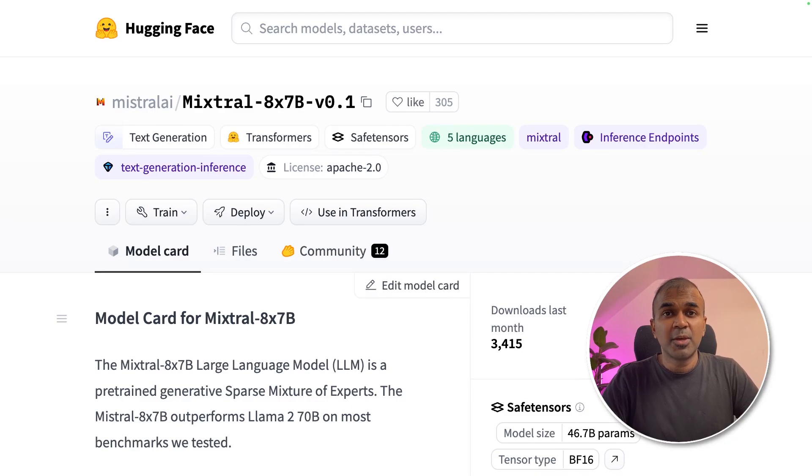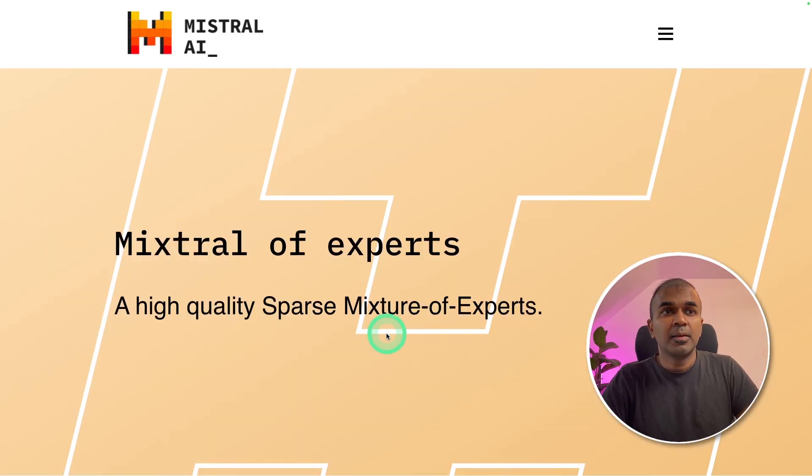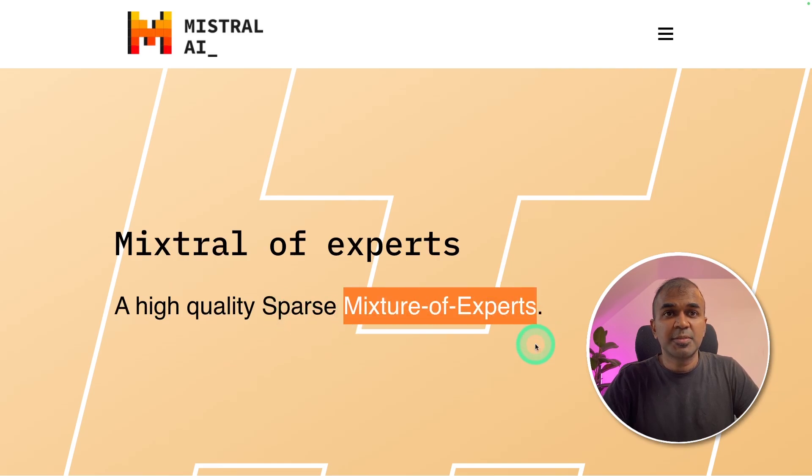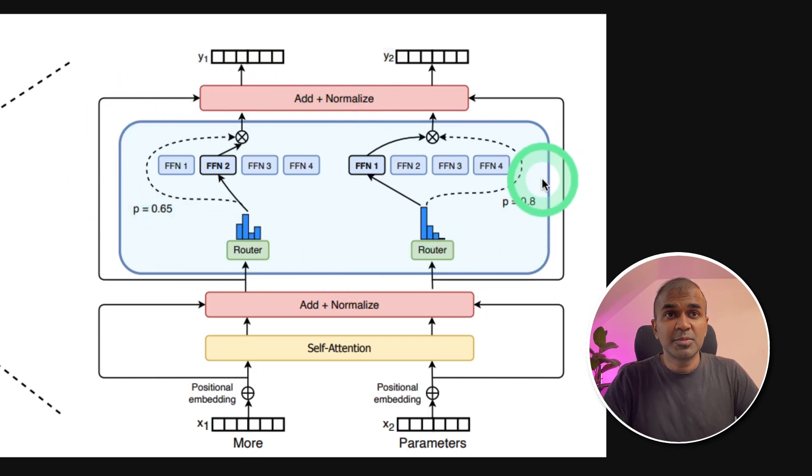Coming to Mixtral 8x7B, you can download that from Hugging Face. This model used something called sparse mixture of experts. So what is mixture of experts? Imagine this is your large language model. For other large language models, when a request comes, the whole large language model processes the request and sends the output.